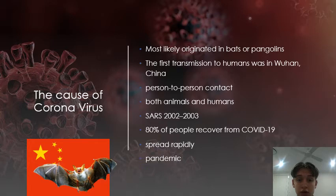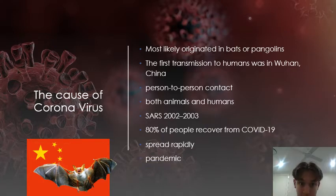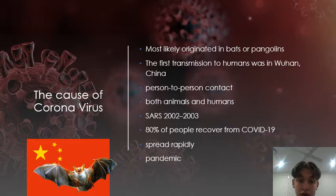Coronavirus is a group of viruses that can cause disease in both animals and humans. The Severe Acute Respiratory Syndrome virus strain, known as SARS-COVID, is an example of coronavirus. SARS spread rapidly in 2002–2003. The new strain is called Severe Acute Respiratory Syndrome Coronavirus 2. The virus causes coronavirus disease, and around 80% of people with COVID-19 recover without specialist treatment.